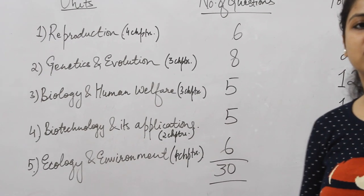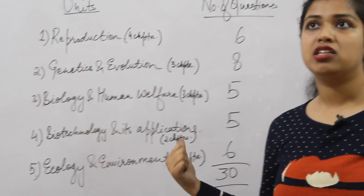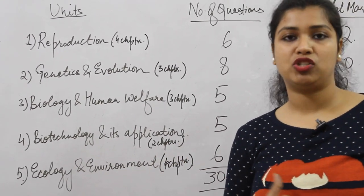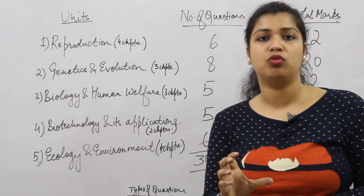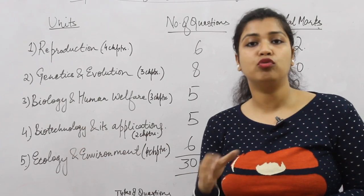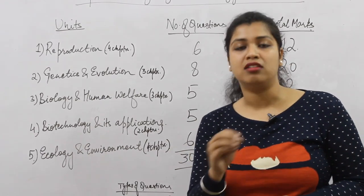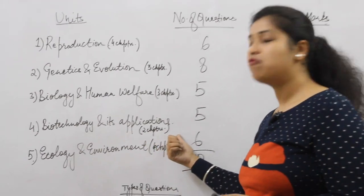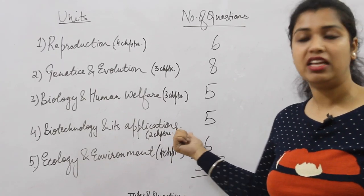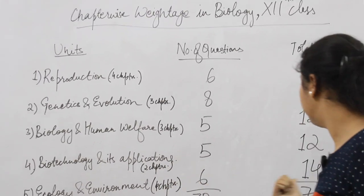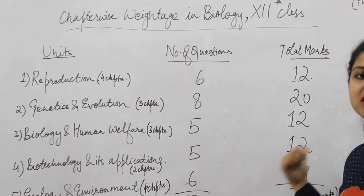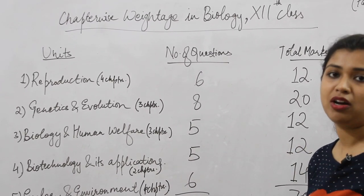In biotechnology and application, this unit is very easy. Questions are application-based, in which you have to think about the situation and answer accordingly. Mostly five marks question is asked. This unit is easy and scoring also. Twelve marks is good marks to score.